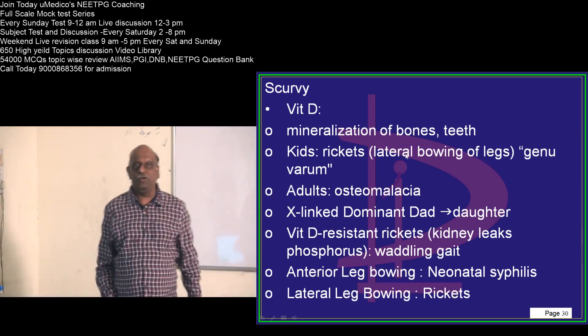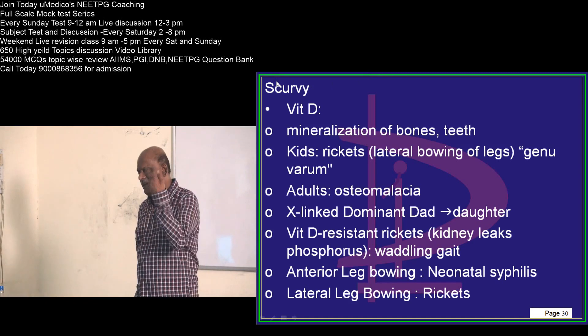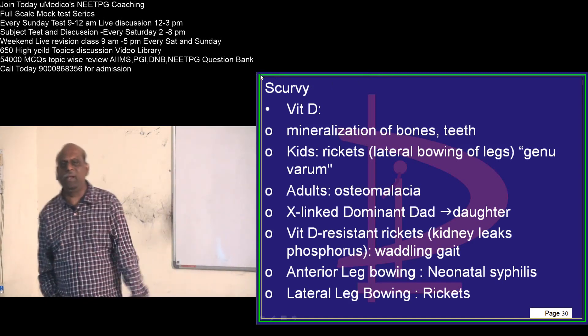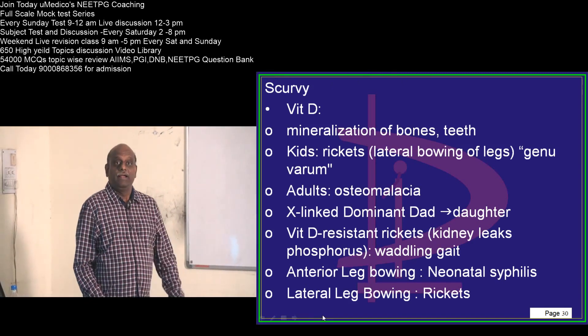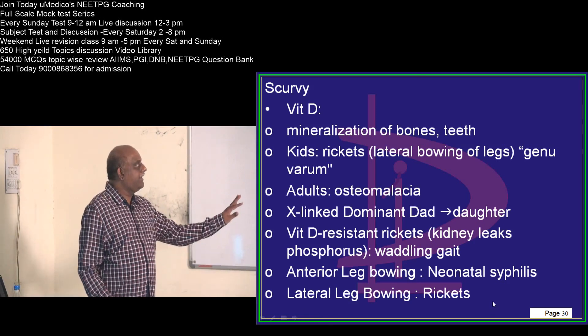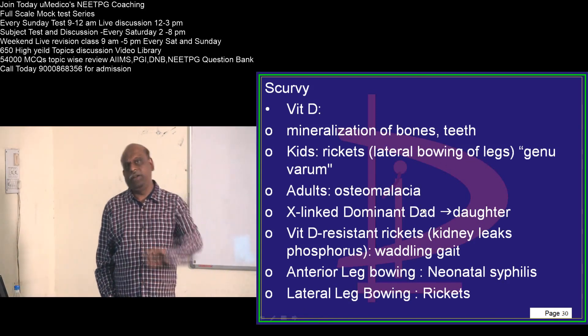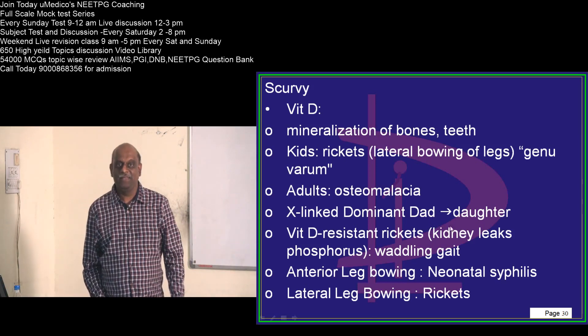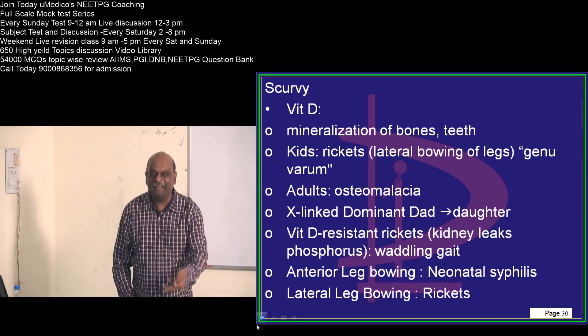Then one important thing about the bowing of the legs, frequently asked in NEET-PG. Lot of students do it wrong. Lateral bowing is called the genu varum. Vitamin D deficiency is associated. Anterior bowing, where is it involved?